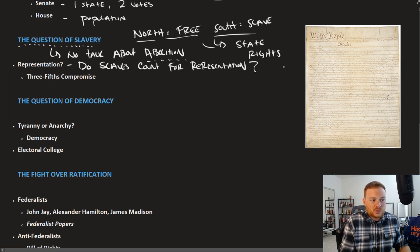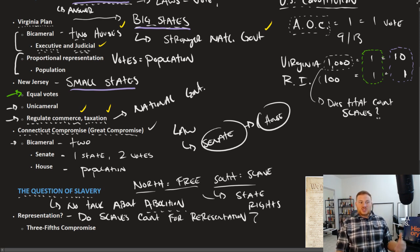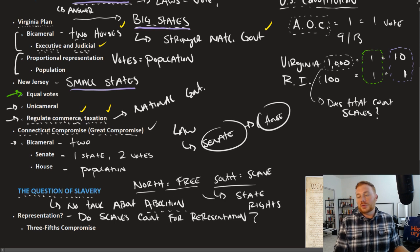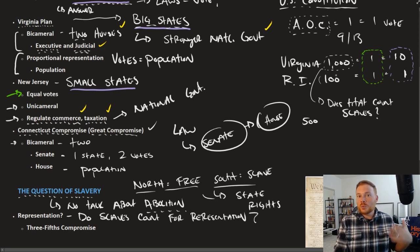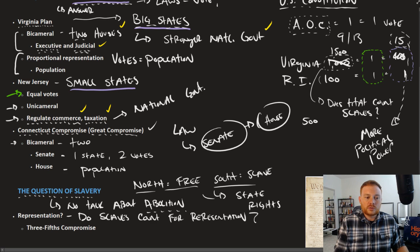Going back to the example: if Virginia has a population of 1,000 free white citizens and 500 slaves, and slaves can be counted toward representation, that number changes to 1,500. Instead of 10 votes in the House of Representatives, Virginia would have 15 votes — essentially more political power. Southern slave states said slaves should count; northern states said slaves should not count.